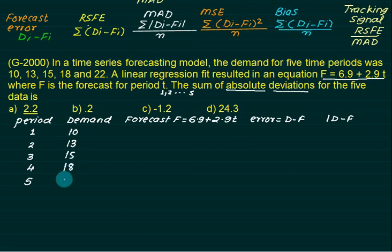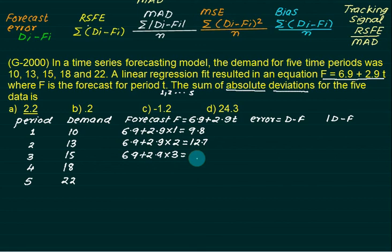To calculate forecast, we put t equal to 1: 6.9 plus 2.9 into 1 equals 9.8. For second period, t equals 2: 6.9 plus 2.9 times 2 equals 12.7. For third period, t equals 3: 15.6. For t equals 4, the answer is 18.4, and for period 5, the answer is 21.4.